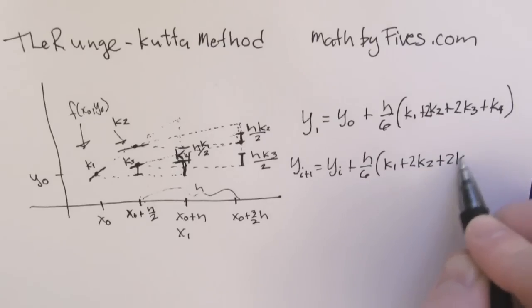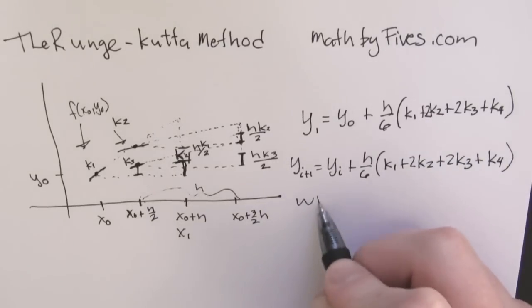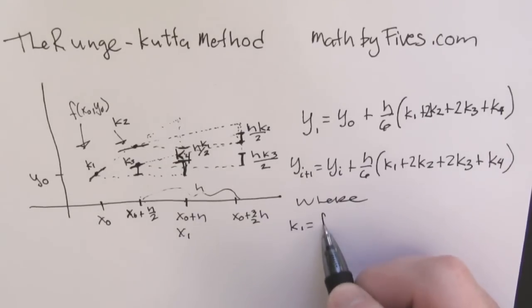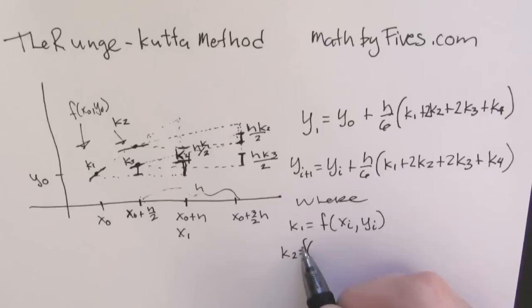So in general, if we're looking for that next height value, it's going to be the height value that you're at plus your new height. And that new height is the approximation of the average of four slopes. Now it looks like we're putting in more general form here.